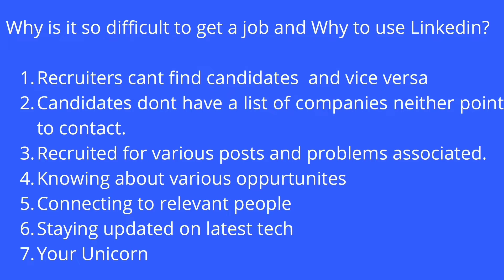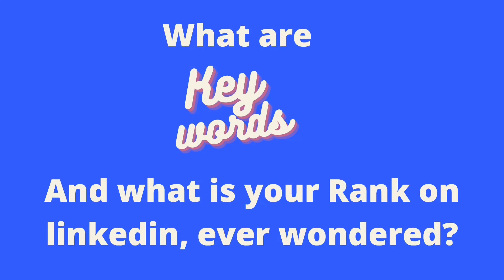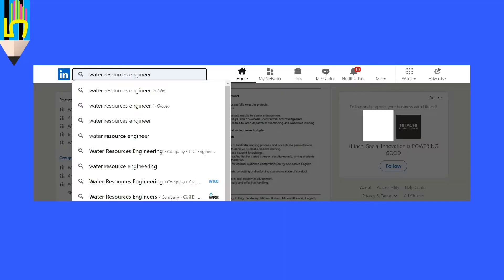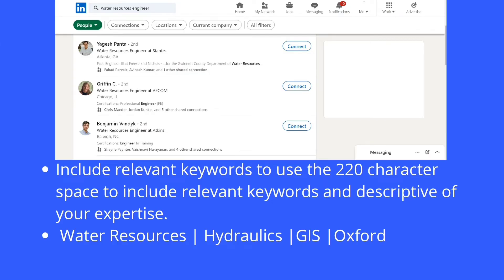Let's start with an example about keywords. If a recruiter is searching for a water resource engineer in Delhi, they go to the LinkedIn search box, search 'water resource engineers', click on the People tab, and get a list. The question is: what is your rank in that list? If you are not on the first or second page of search results, your chance is gone. It is your skill to bring your rank to the top.